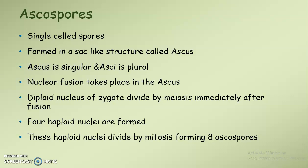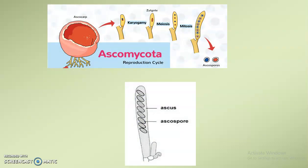This diploid zygote immediately undergoes meiosis and four haploid nuclei are formed. These haploid nuclei then undergo mitosis to form eight ascospores. This meiosis followed by mitosis occurs mainly in the case of Ascomycetes, that is in the formation of ascospores.